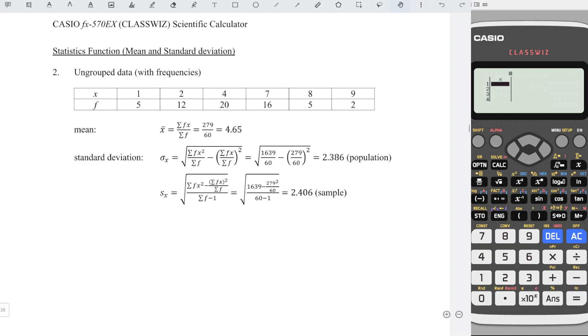Since we have frequency, so we should press shift menu for setup. Down, look for statistics. Sorry. Frequency on one. So we have frequency already, so we can input the data that we have.